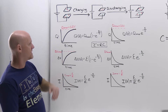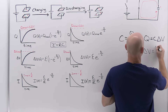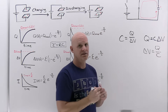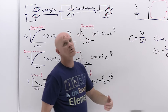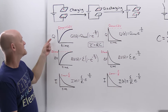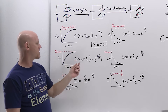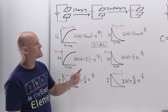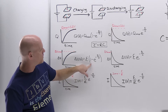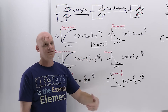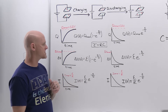Going back to rearranging the capacitance definition, ΔV = Q/C. Since capacitance is a constant, ΔV is directly proportional to Q, so the graph looks exactly the same. We approach ΔV_max — which is just the EMF of the voltage source — following the same equation: ΔV(t) = EMF × (1 − e^(−t/τ)). It also takes about five time constants to reach the max potential difference across the capacitor.